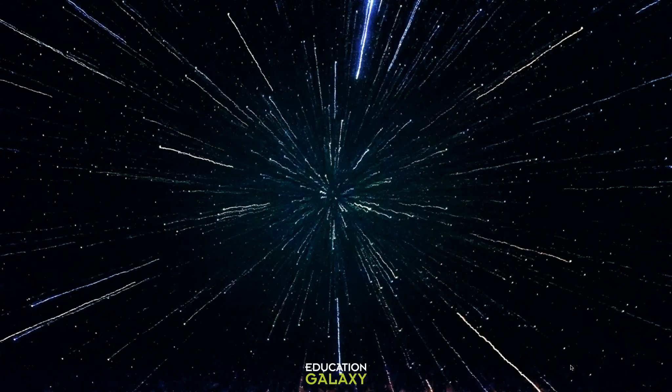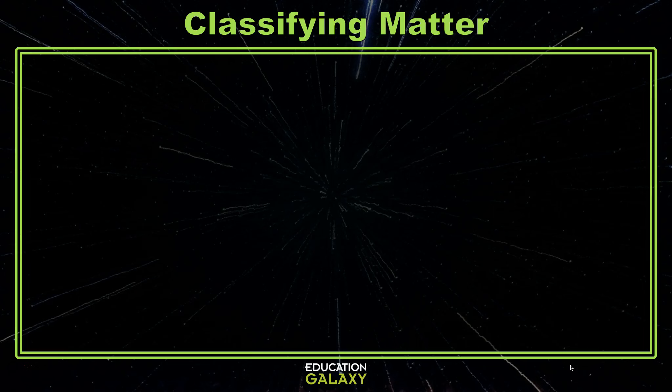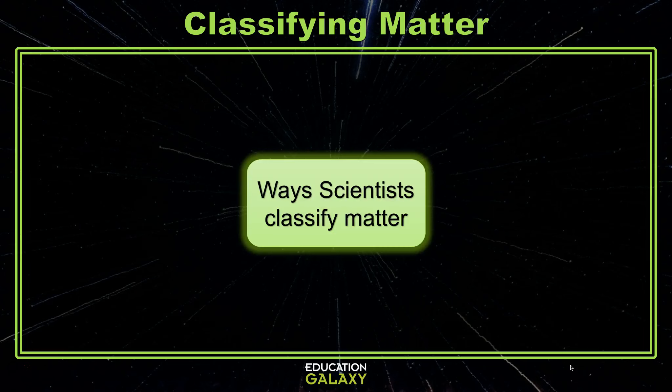Hello alien scientists! Today we're looking at classifying matter. You can describe objects and materials easily by looking at things like their color, texture, or smell. However, scientists classify or put matter into groups based on things you can measure, test, and observe.